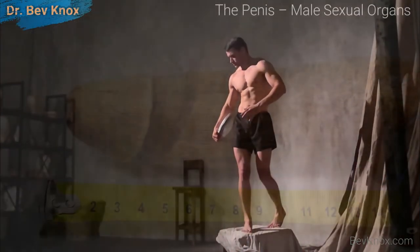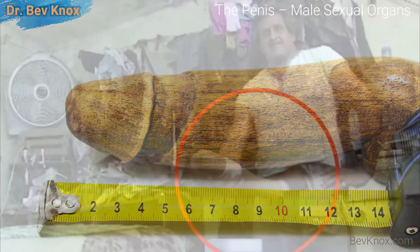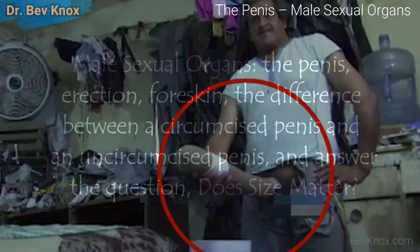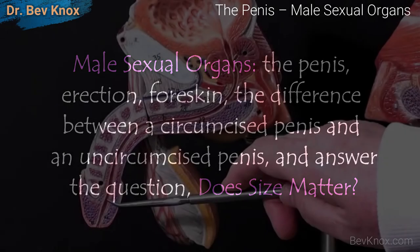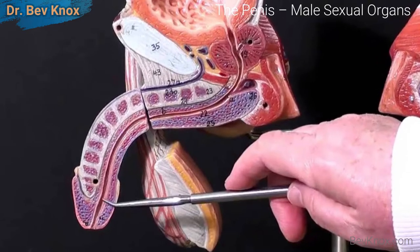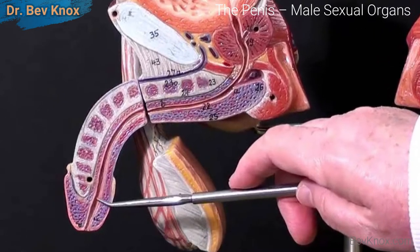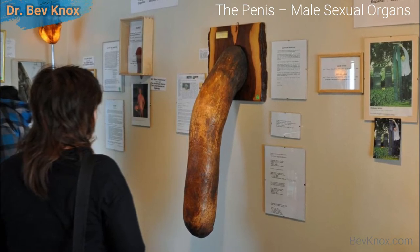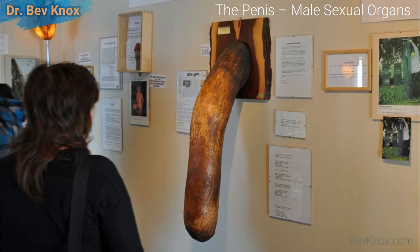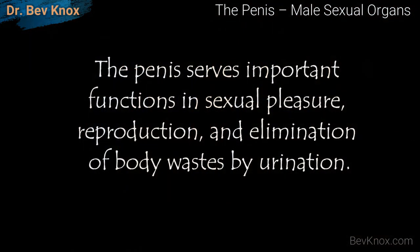Today's lecture is all about the male sexual organs. We're talking about the penis, the erection, the foreskin, and what is the difference between a circumcised and an uncircumcised penis. Externally, the most noticeable parts of the male sexual anatomy are the penis and the scrotum, or scrotal sac, which contains the testes. The penis serves important functions in sexual pleasure, reproduction, and elimination of body wastes by urination.